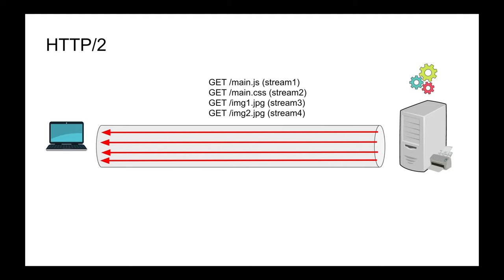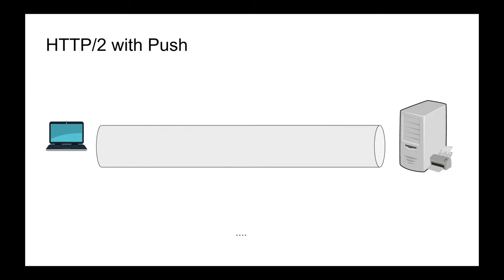The stream ID tagging enables powerful additional features. We could already compress data in HTTP/1, but we couldn't compress headers because we needed them to identify requests. With stream IDs as identifiers, HTTP/2 can compress both headers and data. These features — multiplexing, compression, streams — are all available by default when you enable HTTP/2.